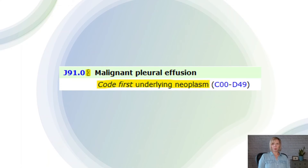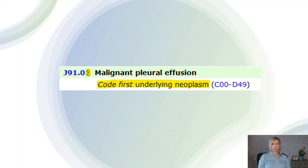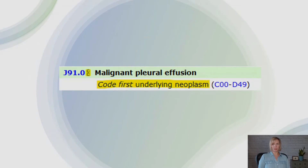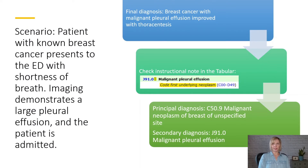For example, malignant pleural effusion is a common complication of certain types of cancer. Malignant pleural effusion has an instructional note to code first the underlying neoplasm. This instructional note indicates the proper sequencing order of the codes: etiology, meaning the cancer, followed by the manifestation, meaning the malignant pleural effusion. Let's take a look at an example.